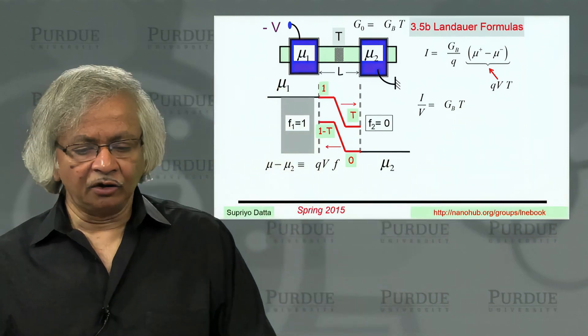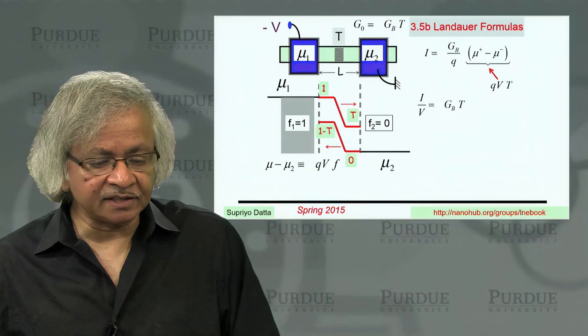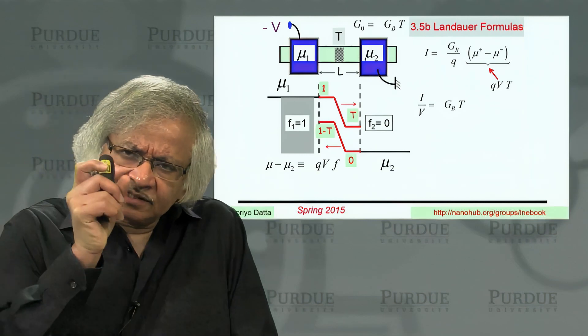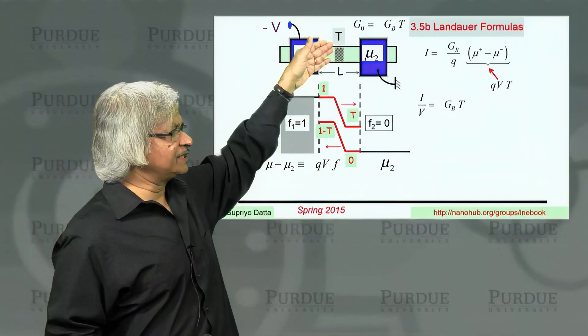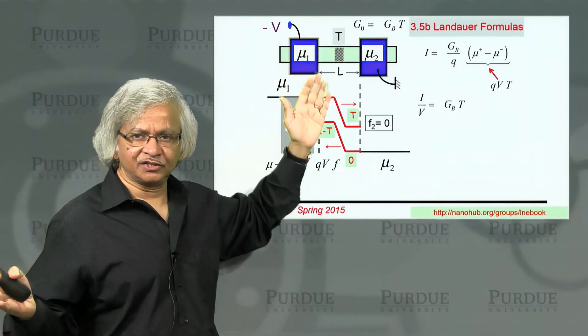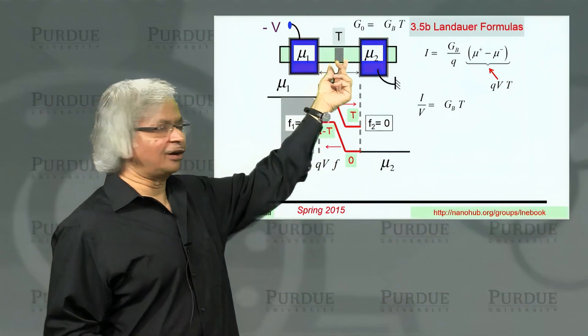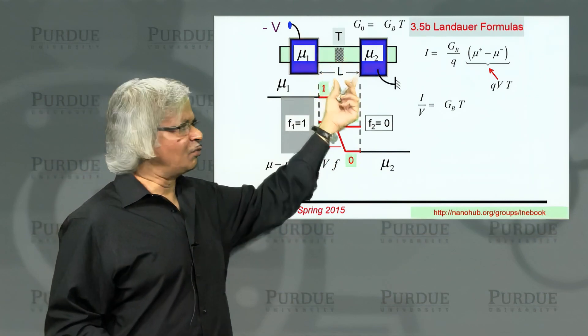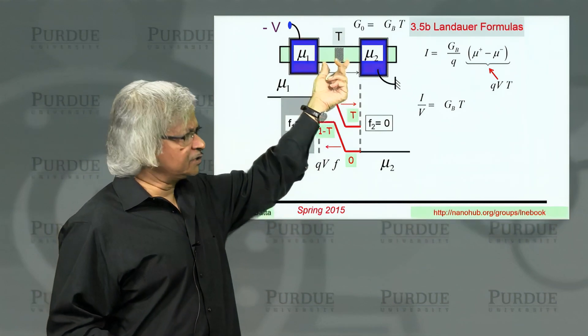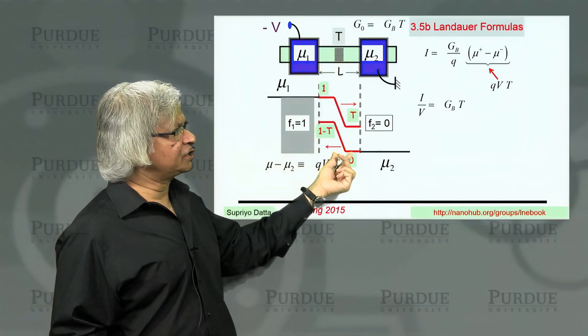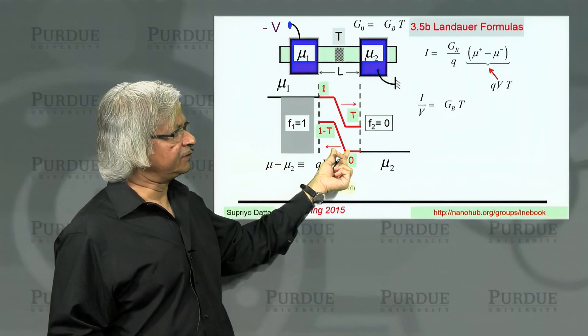You could say that's the conductance, or if you inverted it, it would give you the resistance. But what is the resistance of the scatterer itself? Note that the presence of the scatterer reduced the current significantly and gave rise to a lot of extra resistance.